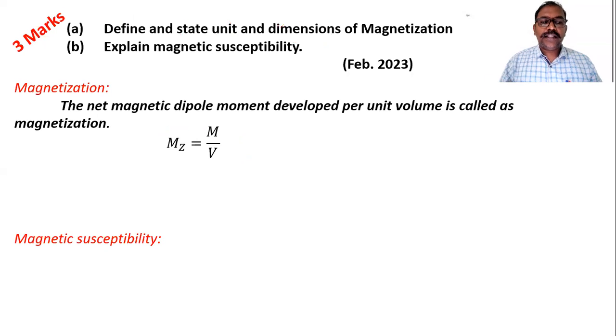So magnetic dipole moment having a unit ampere meter square and volume is meter cube. So meter square and meter square from this get canceled, so ampere per meter is the unit. Ampere per meter is the SI unit.